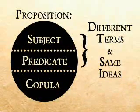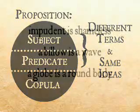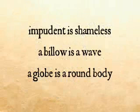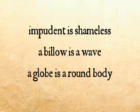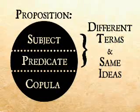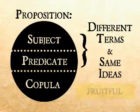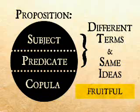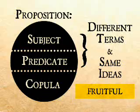Also, sometimes the terms of the subject and predicate can be different, but the ideas may be the same. For example, 'impudent is shameless,' 'a billow is a wave,' 'a globe is a round body.' In these propositions, the words are explained by definition of the name, or the ideas are explained by definition of the things, and this proposition is useful in promoting knowledge of the subject.